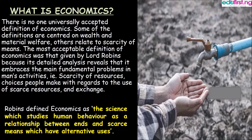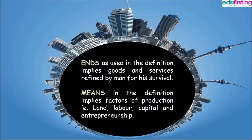Robbins defined economics as a science which studies human behaviour as a relationship between ends and scarce means which have alternative uses. Ends, as used in the definition, implies goods and services required by man for his survival. Means, as used in the definition, implies factors of production or productive factors, which are land, labour, capital, and entrepreneurship.